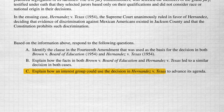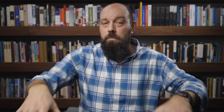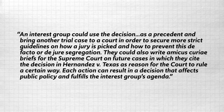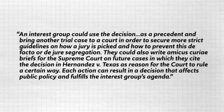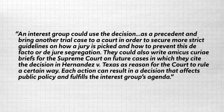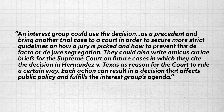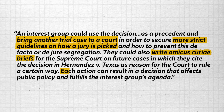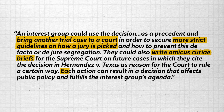Now let's look at Part C: "Explain how an interest group could use the decision in Hernandez v. Texas to advance its agenda." They've taken you out of the comparison realm and want you to bring in other course concepts — in this case, interest groups. Here's a student answer that earns the point: "An interest group could use the decision as a precedent and bring another trial case to court in order to secure stricter guidelines on how a jury is picked and prevent de facto or de jure segregation. They could also write amicus curiae briefs for the Supreme Court on future cases, citing Hernandez v. Texas as the reason for the court to rule a certain way. Each action can result in a decision that affects public policy and fulfills the interest group's agenda." This answer identifies strategies — bringing a case to court and writing amicus curiae briefs — shows the outcome, and ties back to the prompt. Always, always, always tie your answer back to the prompt.